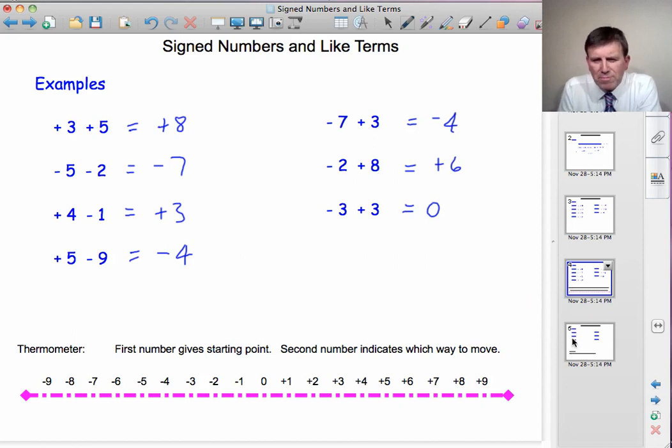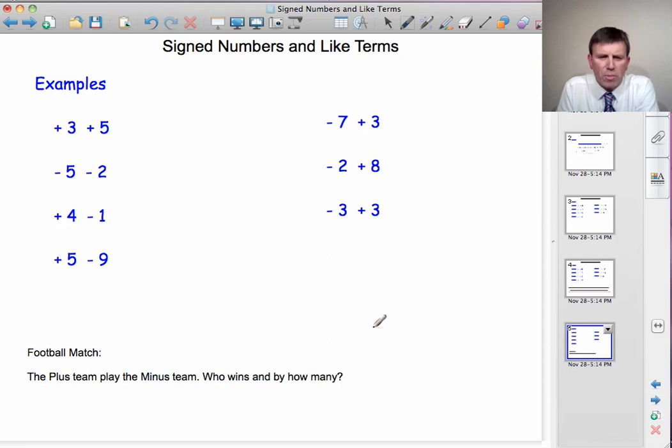One more method. How about if we consider it as a football match? The pluses are playing the minuses. Who wins and how many do they win by? Well, if we look at this one, plus 3, plus 5, the pluses have scored all the goals. They've scored 8 goals. So the pluses win by 8.